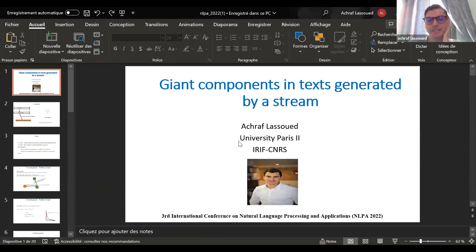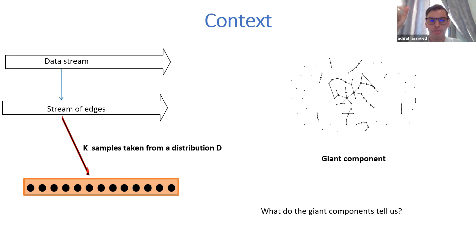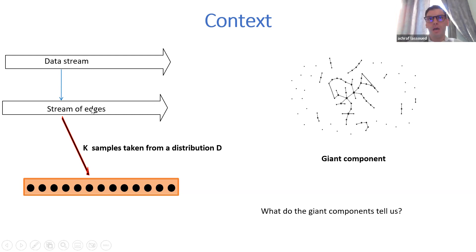The title of this presentation is 'A Giant Component in Text Generated by a Stream.' The context is a data stream of texts generated by a social network like Twitter, or by sources of texts. We transform them into a stream of edges in a graph.